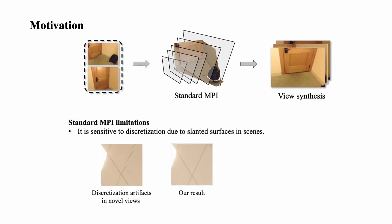As all layered planes are parallel to the source image plane, slanted surfaces will be distributed to multiple MPI layers, causing discretization artifacts in novel views. Increasing the number of layers can improve representation capability but also increases memory and computation costs.